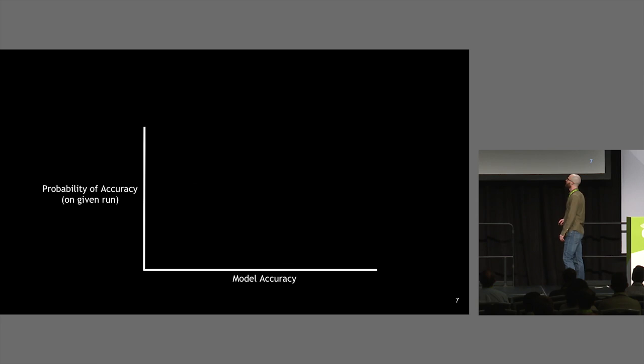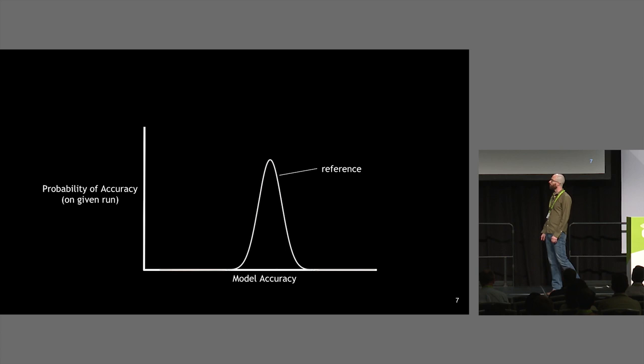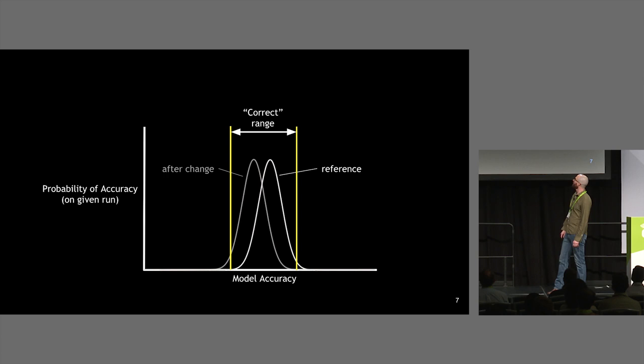This graph summarizes what I just said — showing the distribution of model accuracy against probability, you get a kind of Gaussian distribution. Your model might operate in a certain range and you say that's the correct range. Then you make a change and get a different distribution, with no idea that you've actually changed the true mean or true behavior — and in fact made it worse.